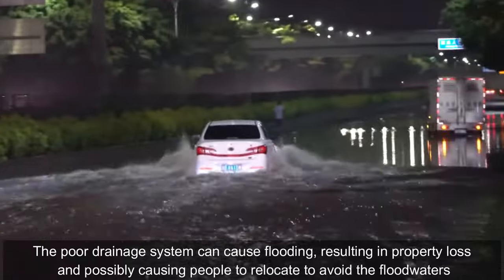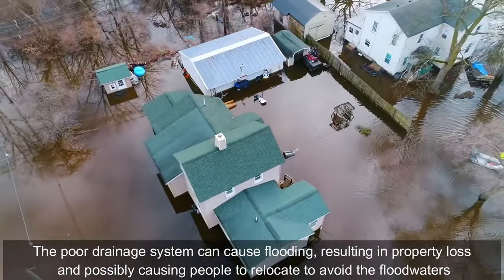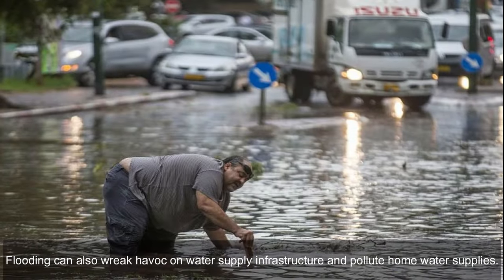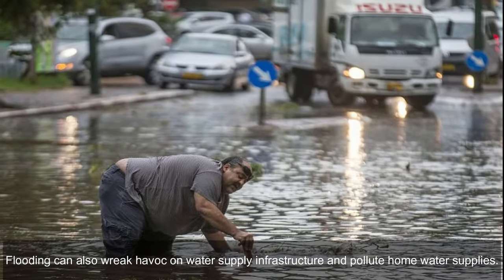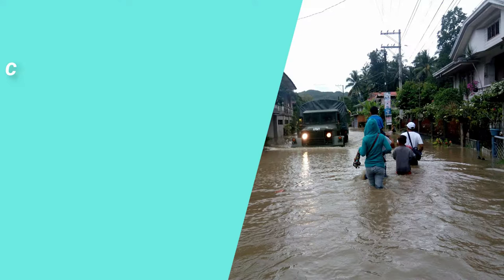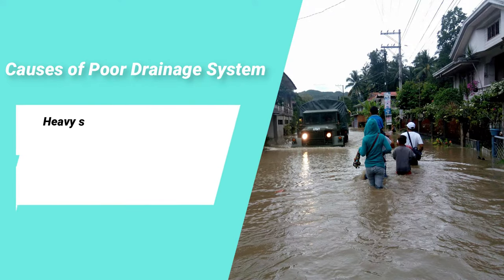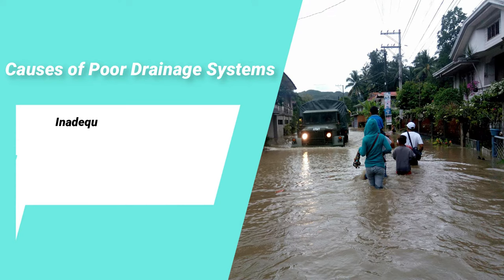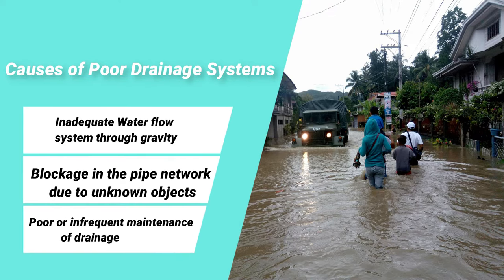What is a poor drainage system? A poor drainage system can cause flooding, resulting in property loss and possibly causing people to relocate to avoid flood waters. Flooding can also wreak havoc on water supply infrastructure and pollute home water supplies. Common causes include heavy storms or rains exceeding design pipe network capacity, damaged pipes, incorrect pipe installation, and inadequate water flow through gravity.